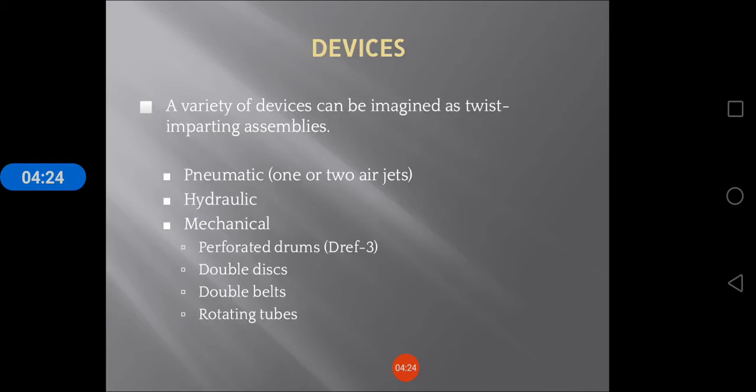Devices: A variety of devices can be imagined as twist-imparting assemblies. One is pneumatic - one or two air jet machines. Another is hydraulics, mechanical and perforated drums, draft three double discs, double belts, and rotating tubes.